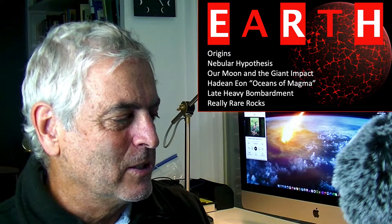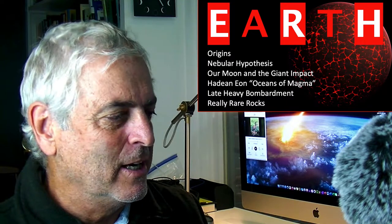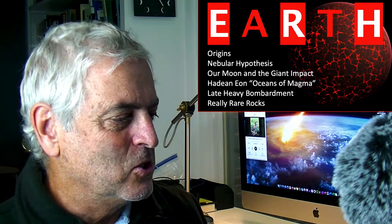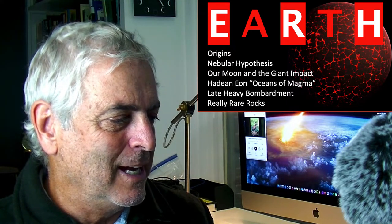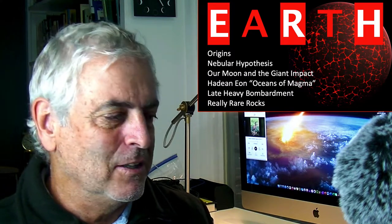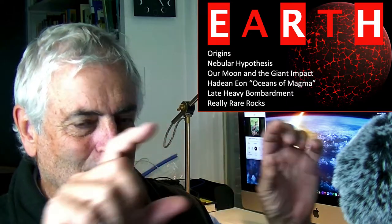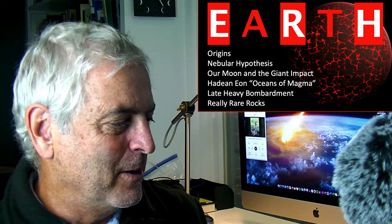So we're going to talk about origins. We're going to talk about the nebular hypothesis. And this is kind of the prevailing ideas about how the Earth originated, how the solar system originated, and how our sun came to be, and then how our moon came to be as well, and the giant impact hypothesis. And then we're going to talk about the very beginnings of time on Earth with the Hadean Eon and this idea that we actually had oceans of magma.